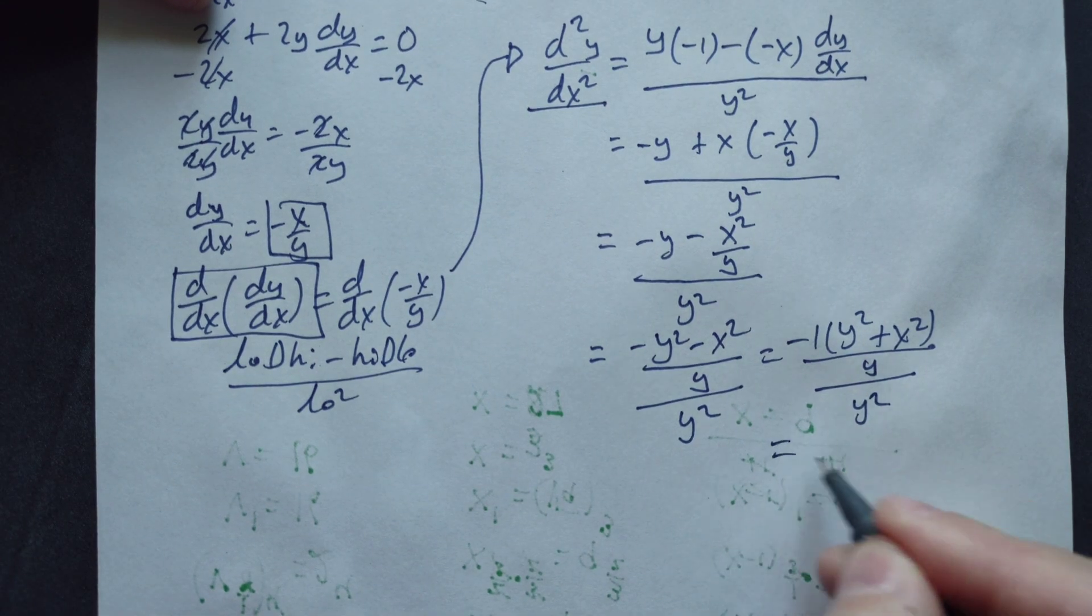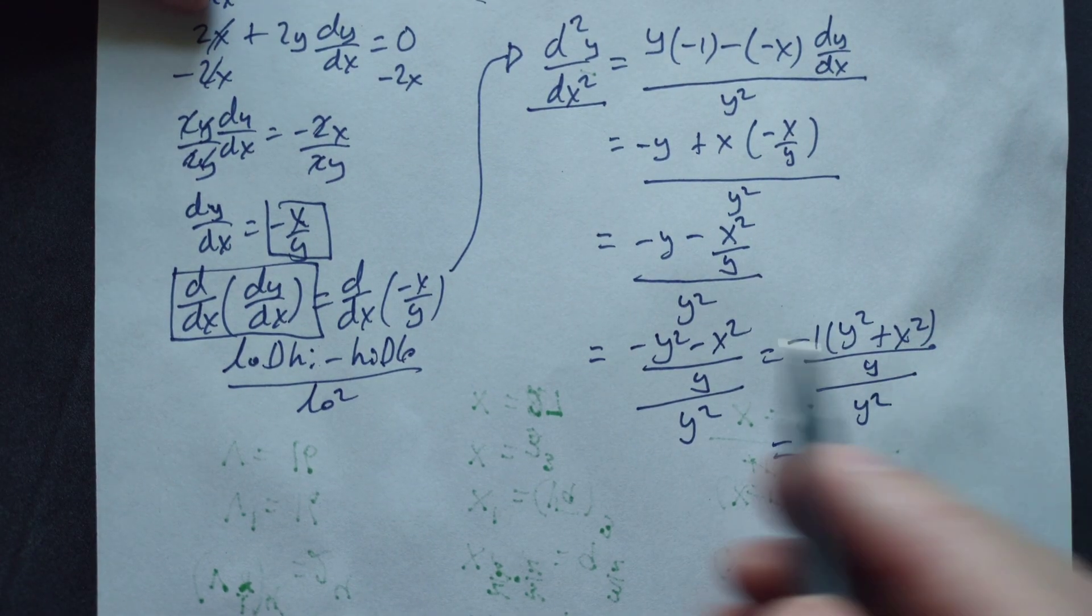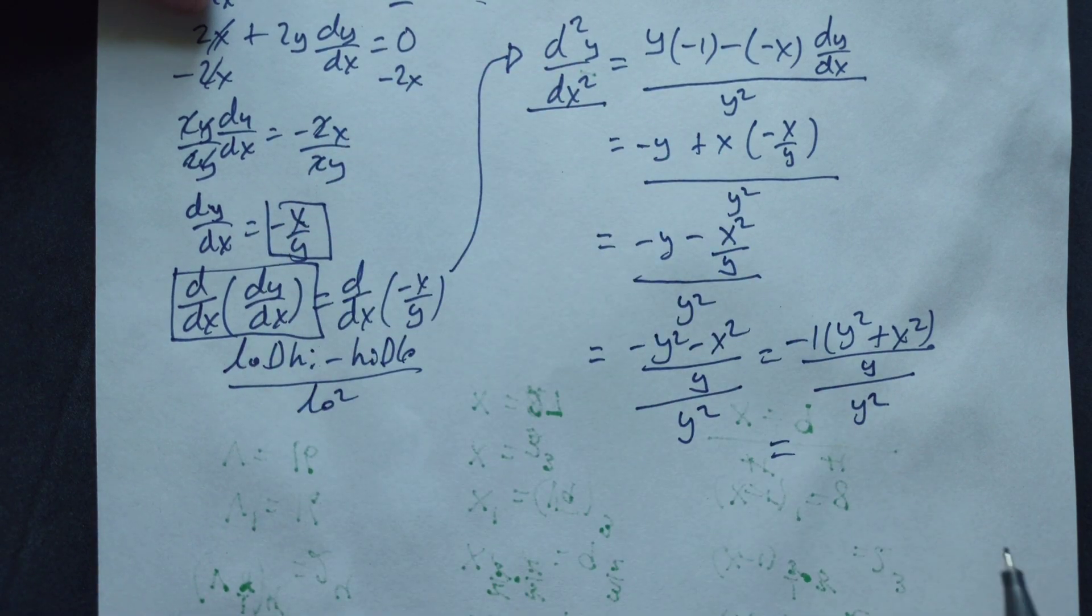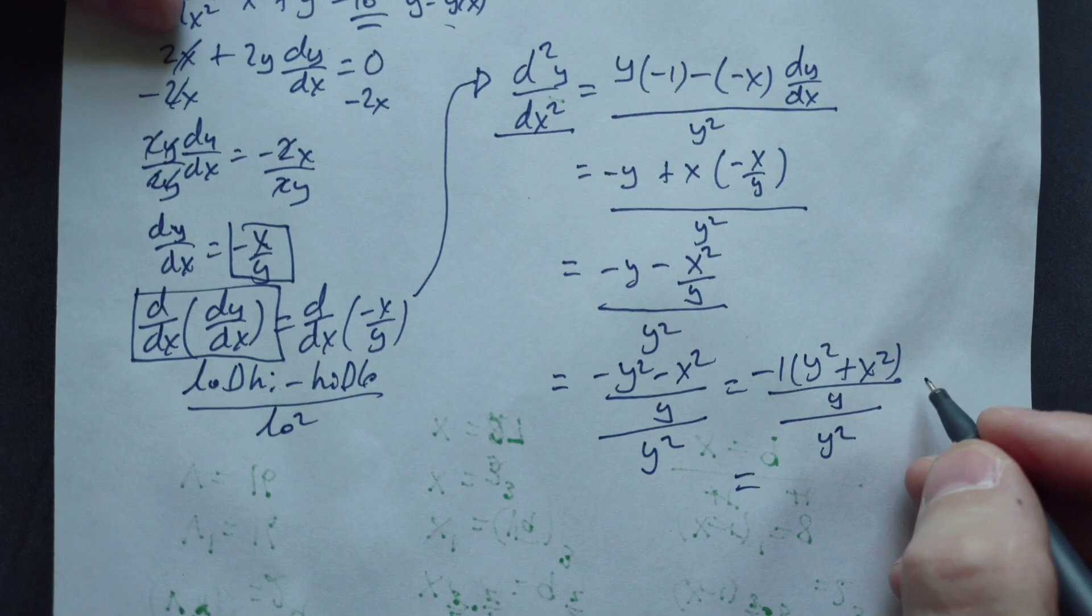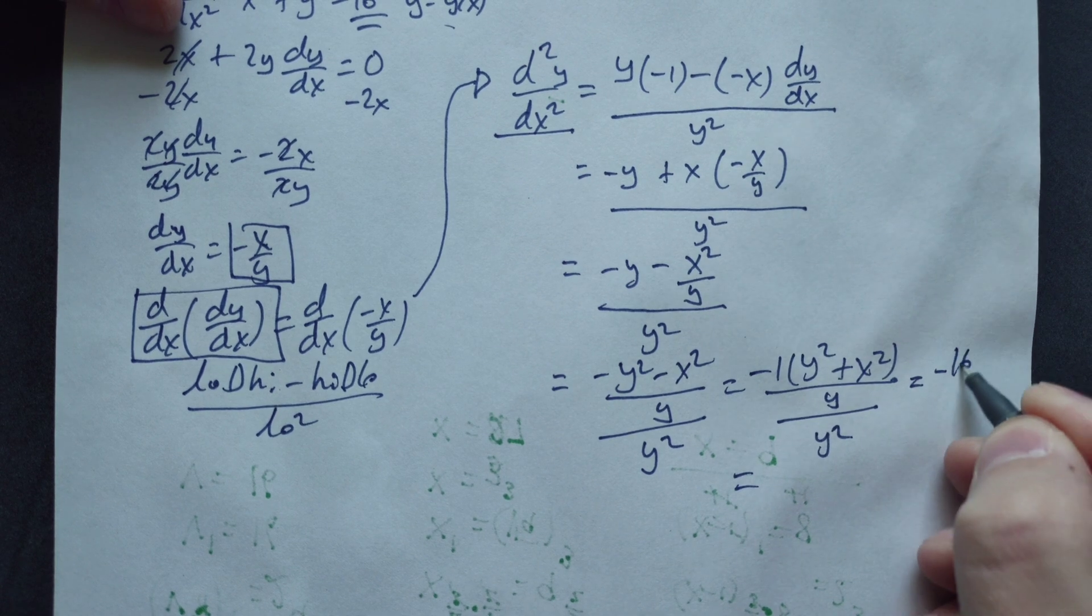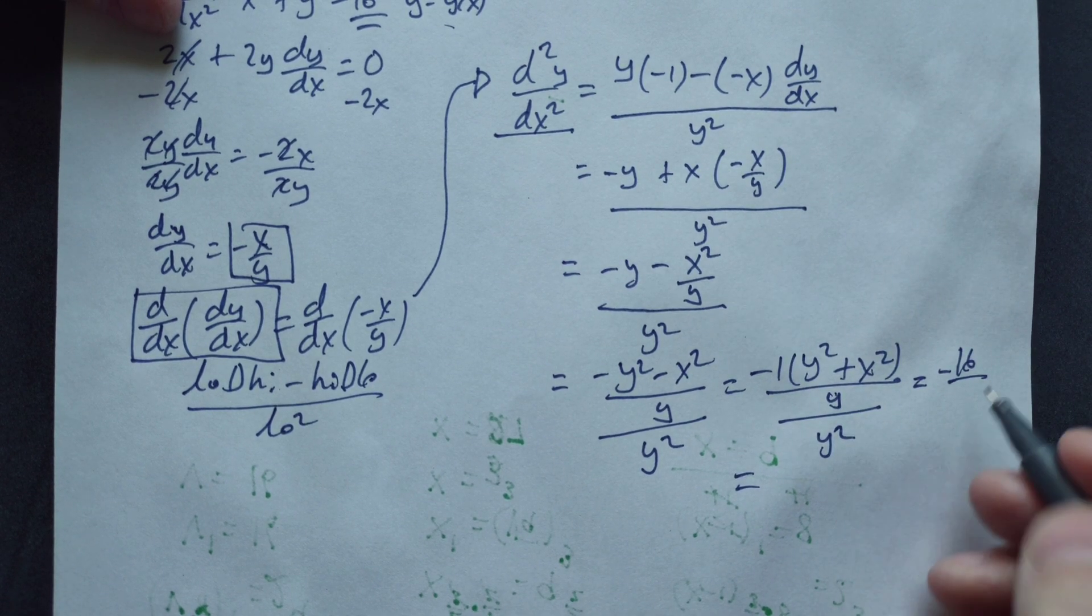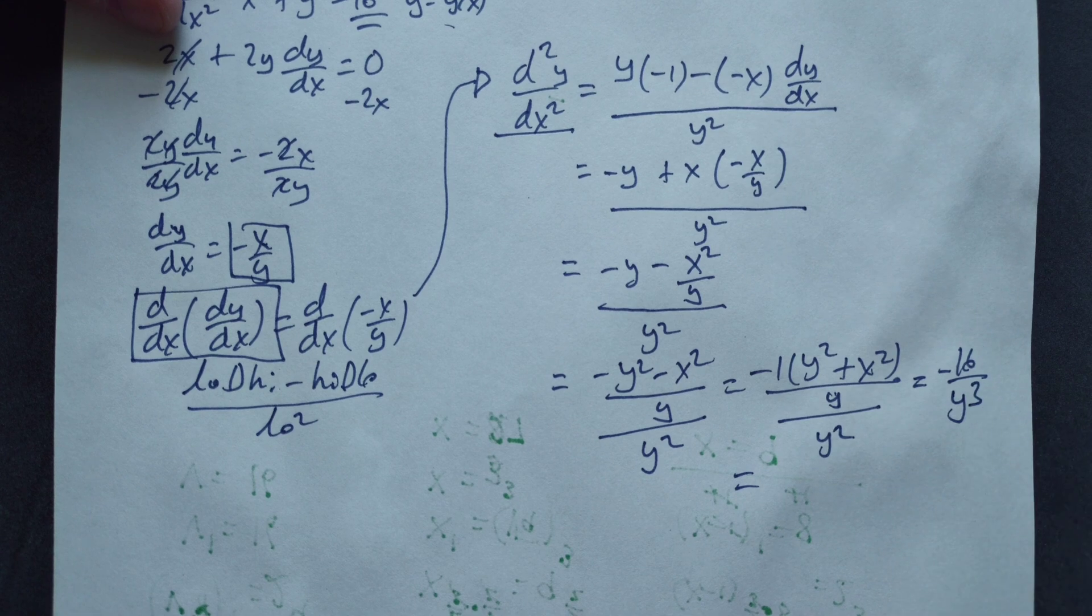Continue with the crazy fractions. Remember y squared plus x squared back here is equal to 16. We're told that initially. So that means you're going to have negative 16, and the y over the y squared becomes y cubed.